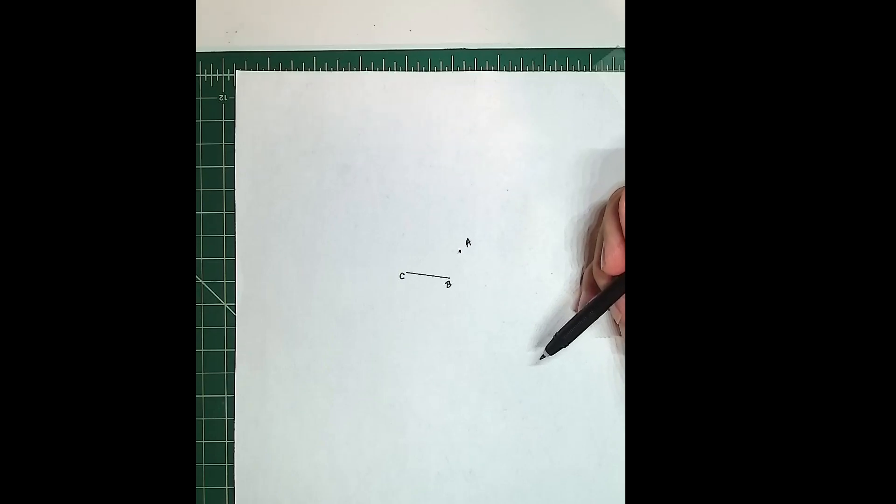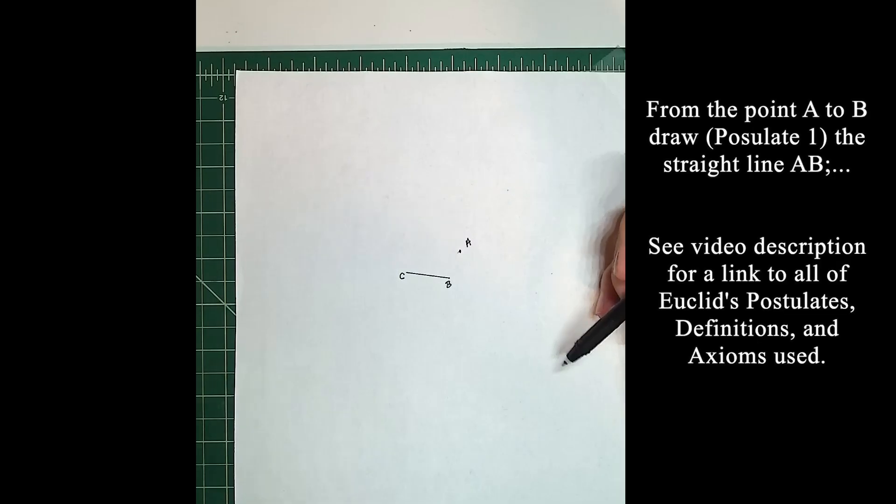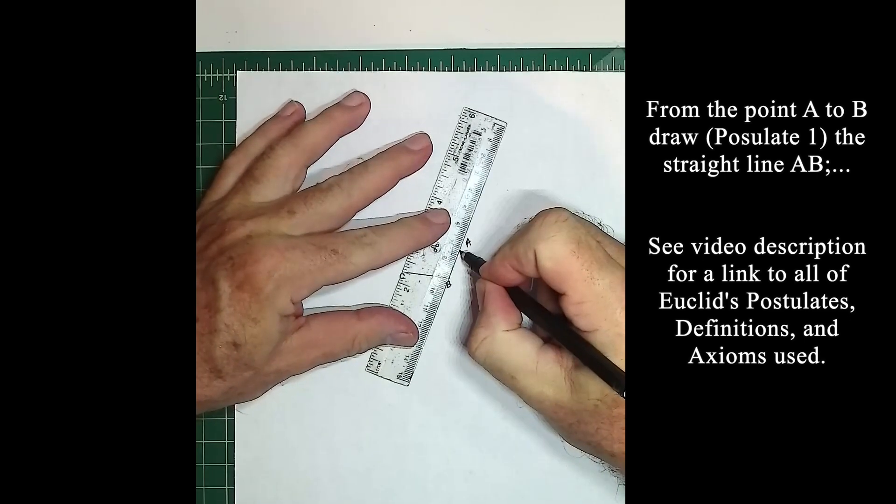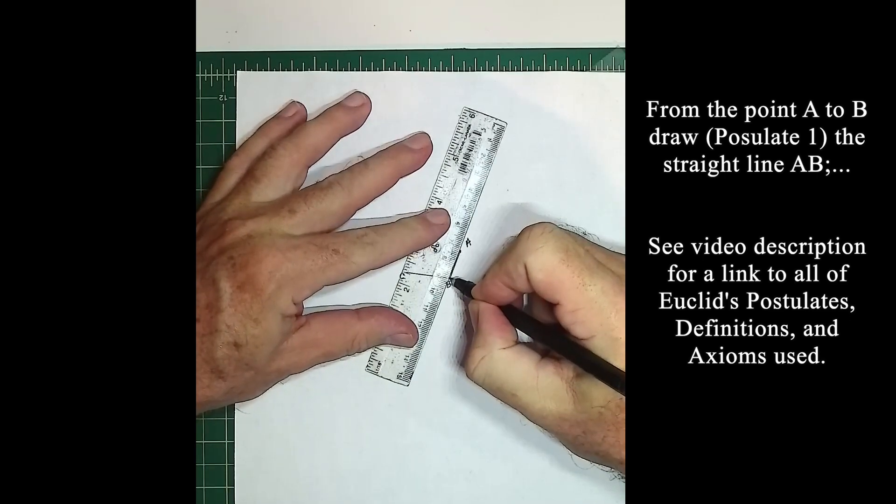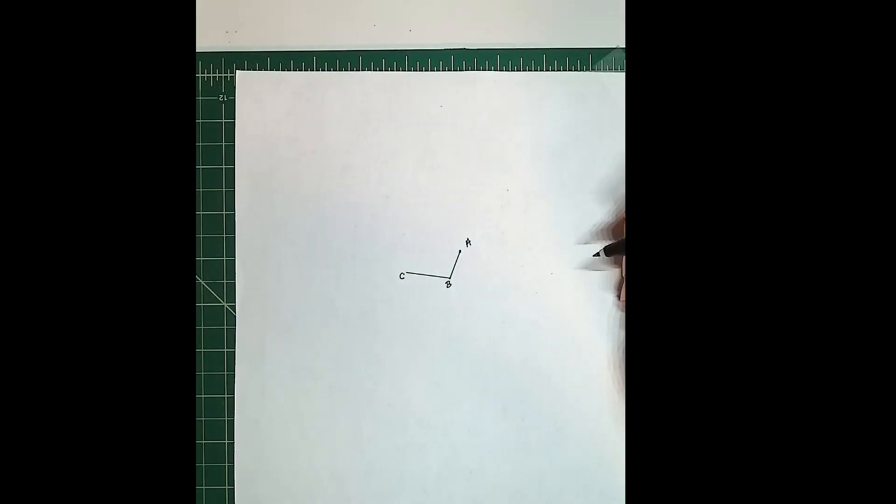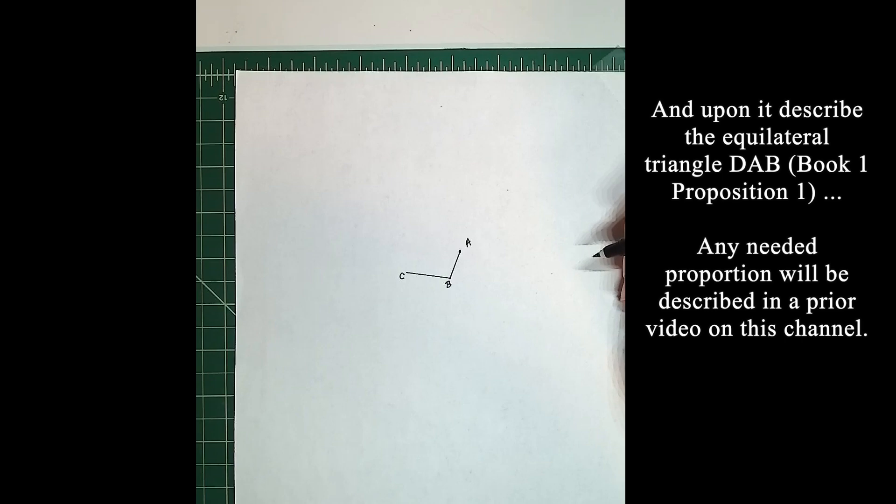From point A to B, draw a straight line or line segment AB. So we're going to go from here to here. And upon it describe the equilateral triangle DAB.